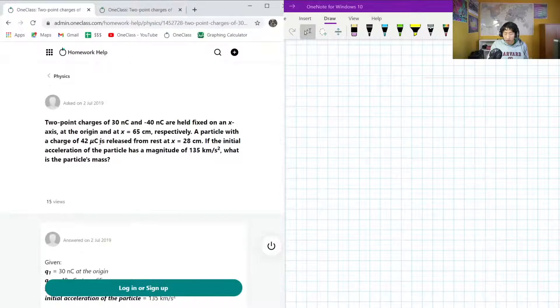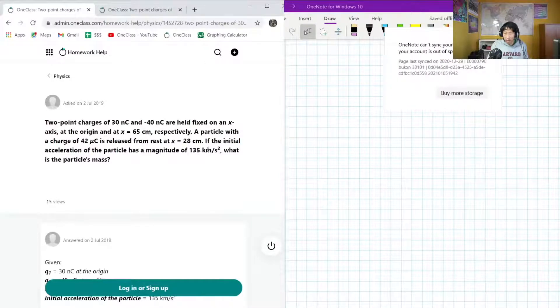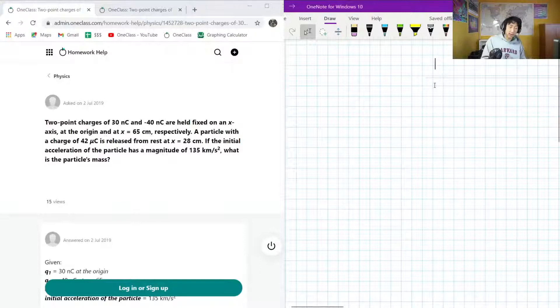A particle with a charge of 42 microcoulombs is released from rest at 28 centimeters. If the initial acceleration of the particle is 135 kilometers per second squared, what is the particle's mass? Okay, this is a very fascinating question. I actually very like this question.